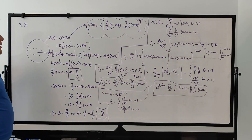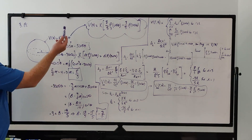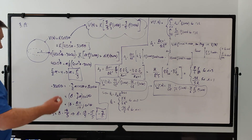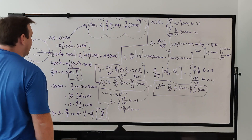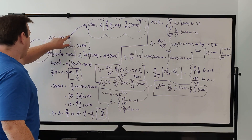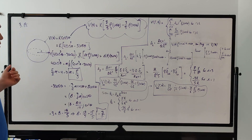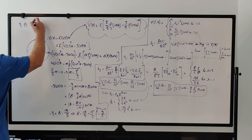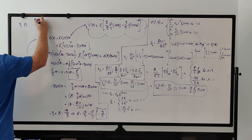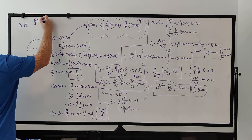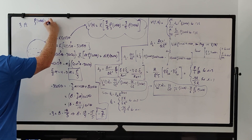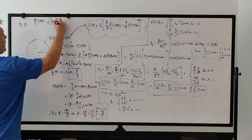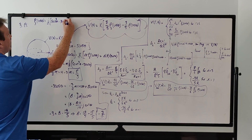This is just a trig identity that I had to look up — you can find it on the internet or in textbooks. Expressing it this way allows us to make this term look more like Legendre polynomials, because P₃, the third Legendre polynomial, is essentially one-half times 5 cosine cubed of theta minus 3 cosine of theta.